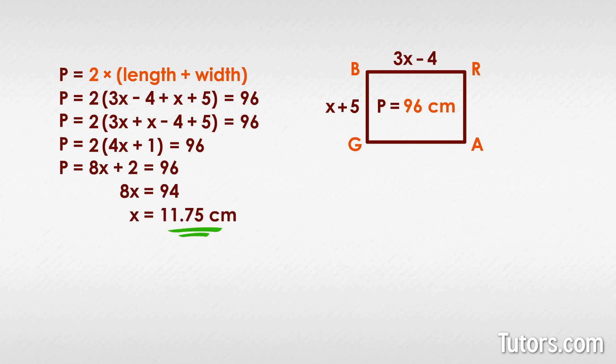Now you can plug 11.75 centimeters into the x values and check. 3x minus 4 becomes 3 times 11.75 minus 4, which equals 31.25, and x plus 5 becomes 11.75 plus 5, which equals 16.75.